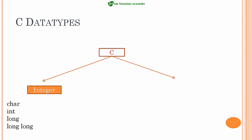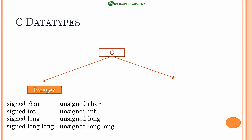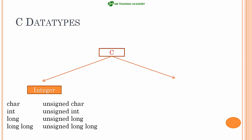The integer data types available in C are char, int, long, and long long. These also have unsigned versions: unsigned char, unsigned int, unsigned long, and unsigned long long. The unsigned types exclude the negative range. Without the unsigned qualifier, char, int, long, and long long are called signed data types and include negative values. You can omit the signed keyword as it is implied by default.